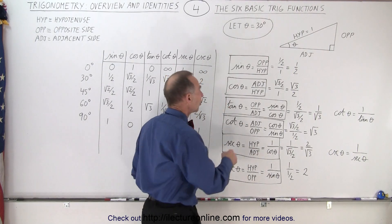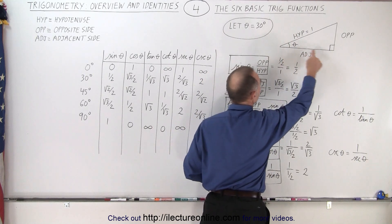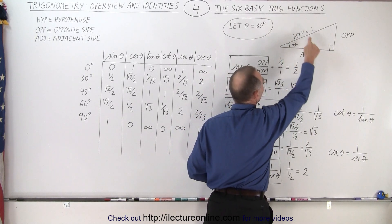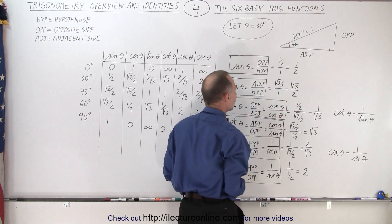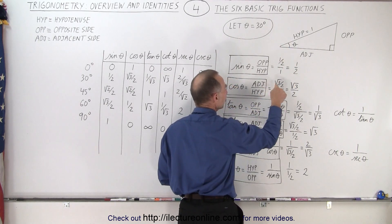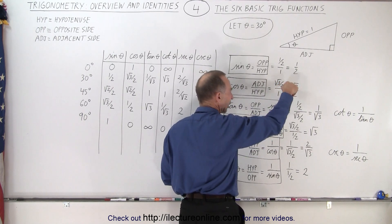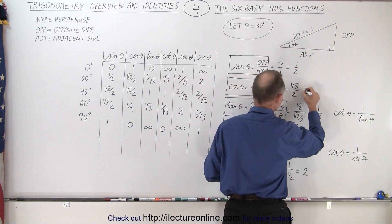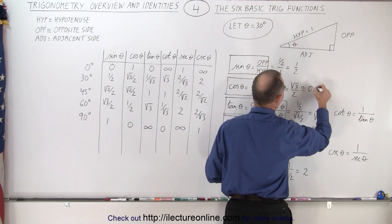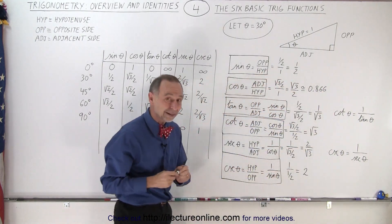For the cosine, the definition is the ratio of the adjacent side to the hypotenuse. You can see the adjacent side is longer but not quite as long as the hypotenuse, so the ratio will be slightly less than one. In this case, the adjacent side will be equal to the square root of three over two, and the hypotenuse is equal to one. So the ratio will be the square root of three over two, which is approximately equal to 0.866.